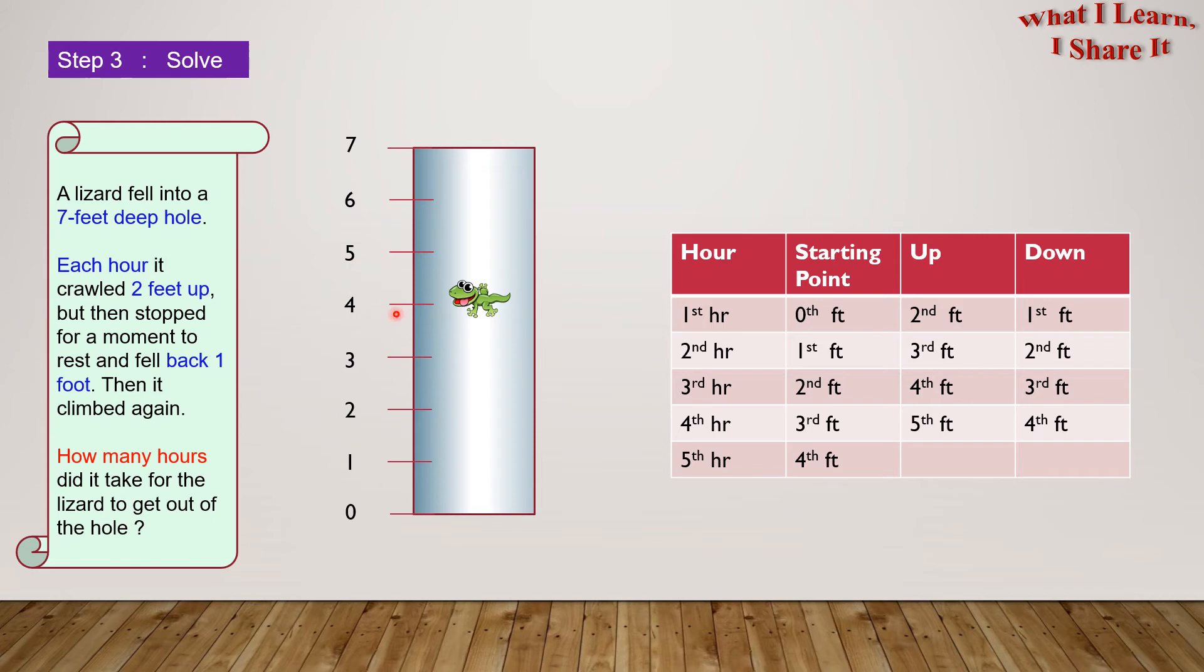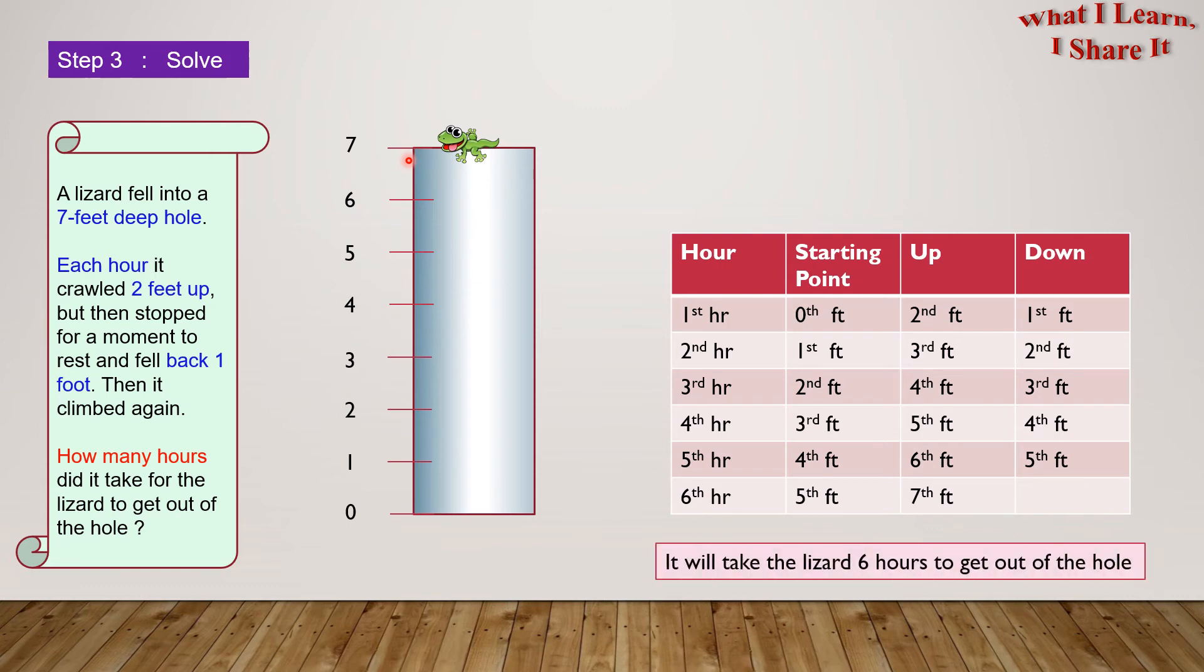In the fifth hour, it'll start from the fourth foot, and go up to the sixth foot, and again slides down one foot, and reaches the fifth foot. In the sixth hour, it'll start from the fifth foot, and reaches the seventh foot, and comes out of the hole. The lizard won't fall this time, because it's already out of the hole. So, it'll take the lizard six hours to get out of the hole.